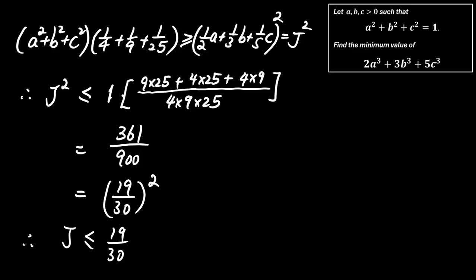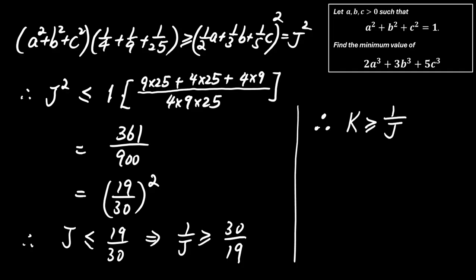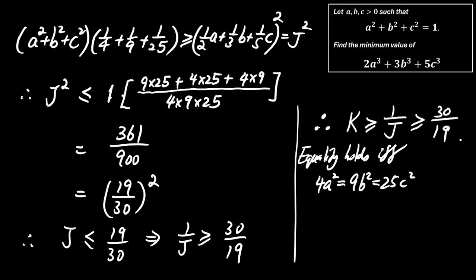Therefore, J is at most 19 over 30, which implies that K is at least 30 over 19. Now we check if equality can be achieved. Equality in both Cauchy steps occurs when the sequences are proportional. That gives 4a squared equals 9b squared equals 25c squared. Solving this system under the constraint a squared plus b squared plus c squared equals 1.